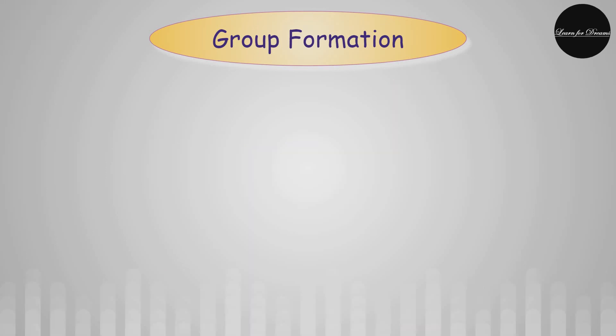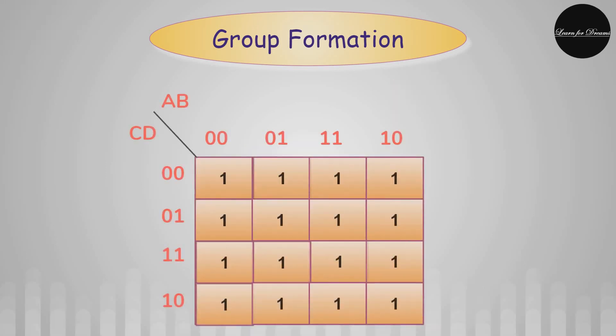Also the logic for this equation will not change and the equation is D bar B bar. If there are all 16 ones in the K-Map then the equation or you can say the output is one.